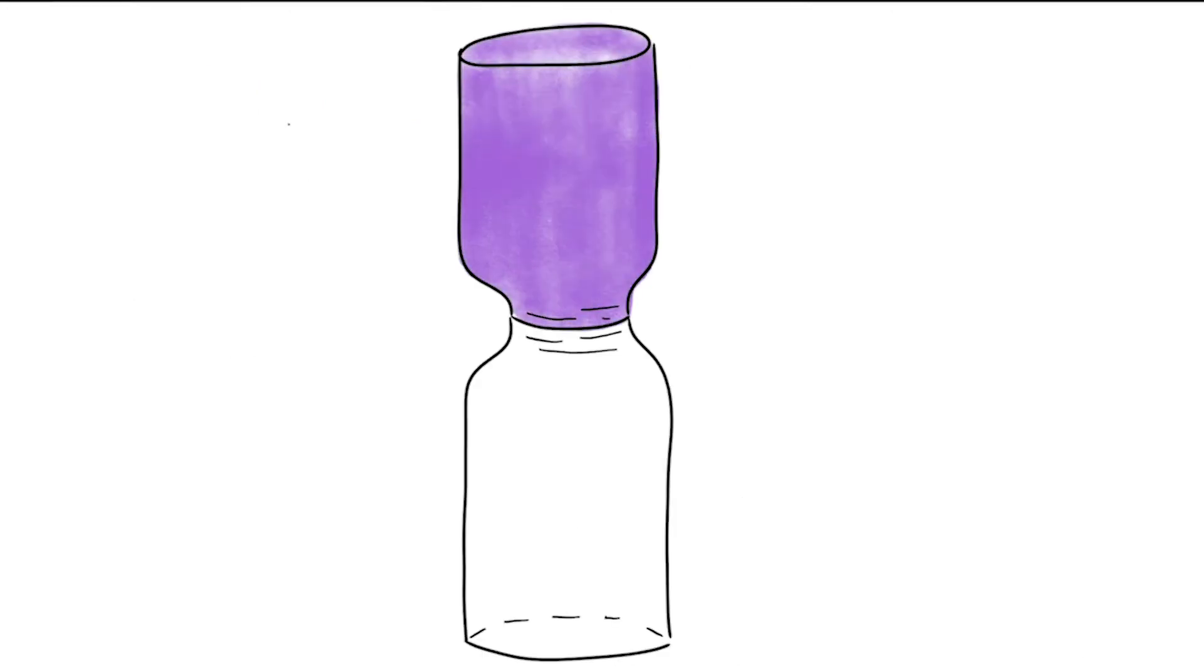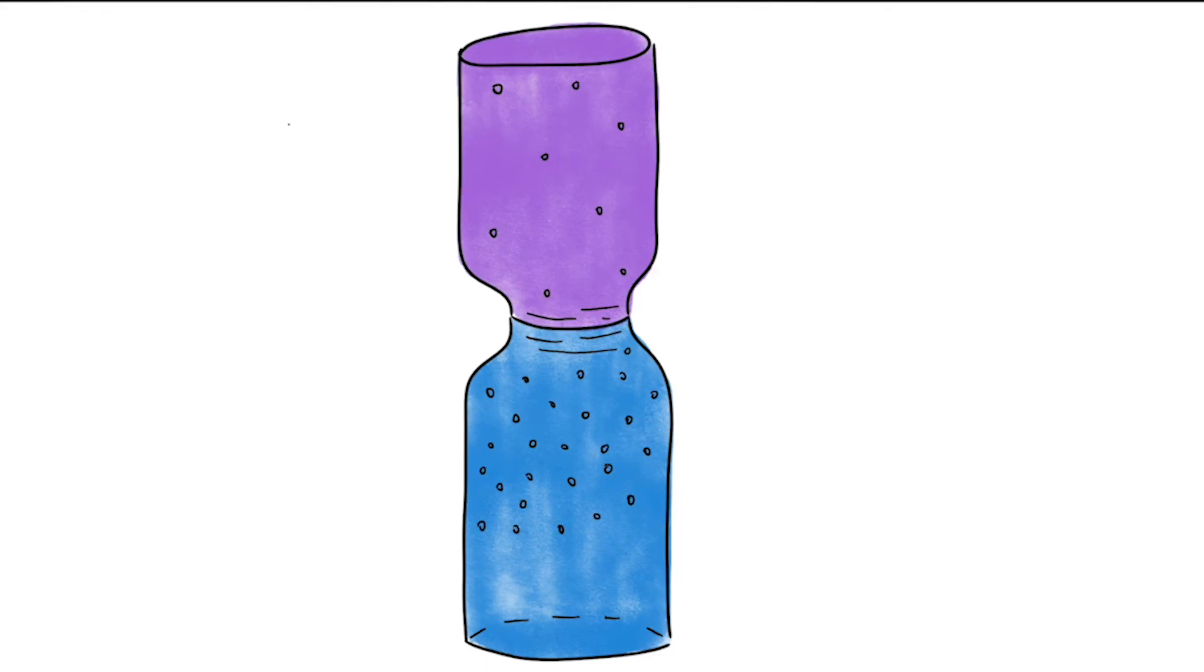On the other hand, when the hot water is on top, there is no mixing. This is because all of the denser, colder water is already at the bottom. We know that the denser water sinks, but since it's already at the bottom, there's no movement or mixing.